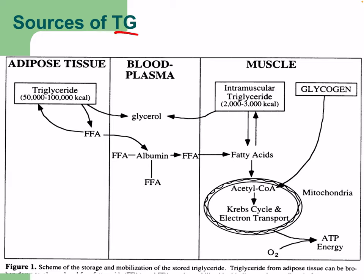Sources of triglycerides include adipose tissue, which contains up to 50,000 to 100,000 kilocalories. In the blood, free fatty acids can be carried by albumin and glycerol can also enter the blood. We also have intramuscular stores of triglycerides, which are much more limited in comparison to adipose stores.